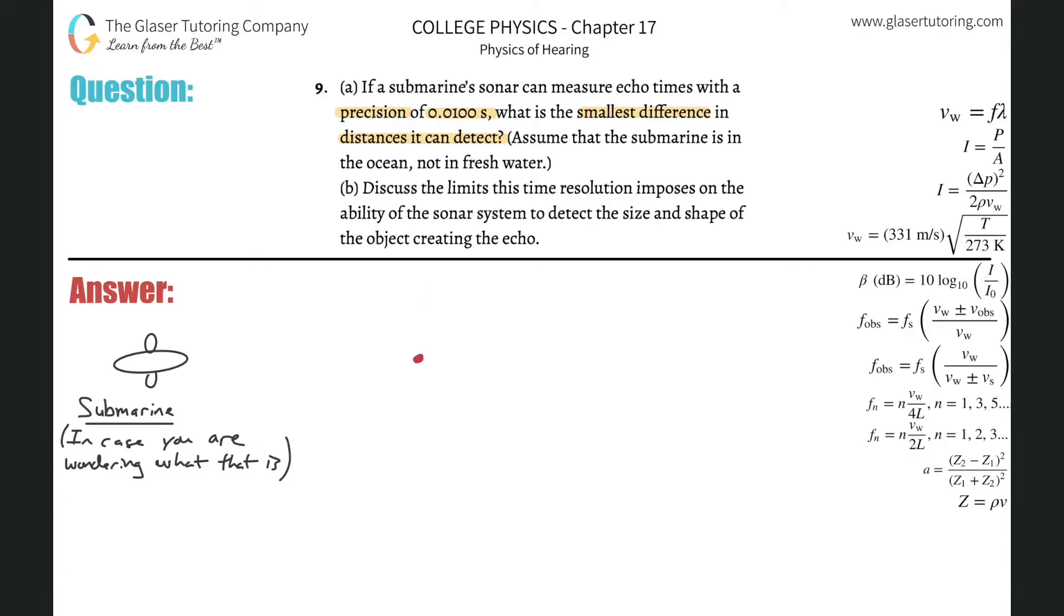So the submarine will send out some sonar, it travels as a wave, it hits the object, and then it reflects back. When the submarine detects that sonar wave traveling back, when it detects the wave hitting the submarine again, it can calculate the distance that this object is from the submarine.